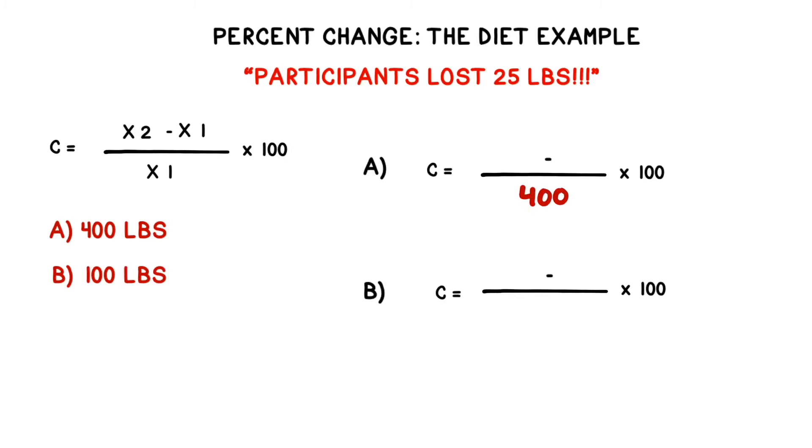We're going to use our standard equation, and we'll begin by filling in the patient's starting weights in place of x1 in both A and B. Since we know that each of these patients both lost 25 pounds on our fictional diet, we can figure out what their end weight was. Then we can plug it into the equations, 375 for patient A and 75 for patient B.